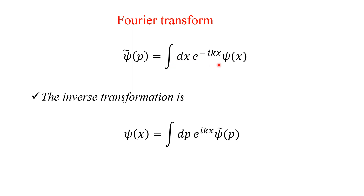Bringing things to the other side, the inverse Fourier transformation gives ψ(x) = ∫ dp e^(+ikx) ψ̃(p). Thank you very much for watching and supporting me.